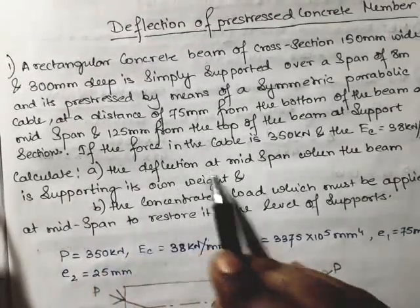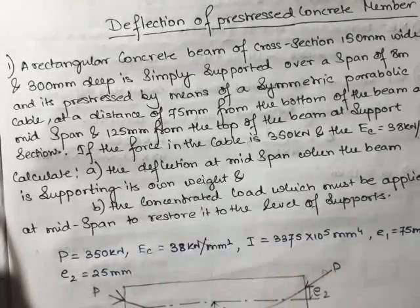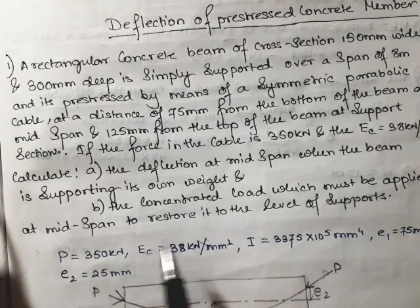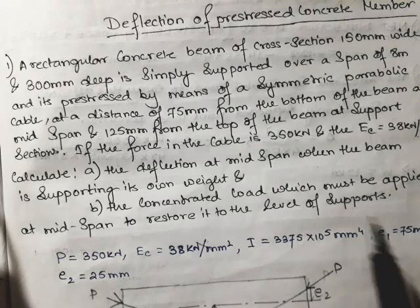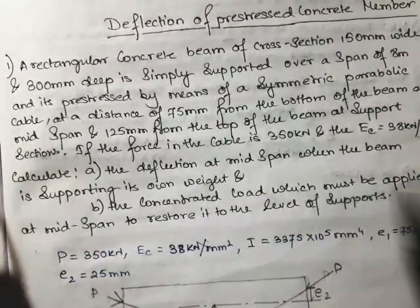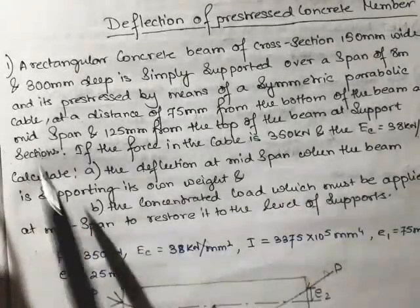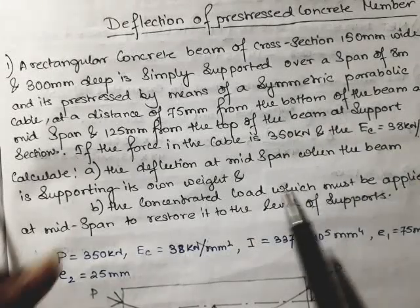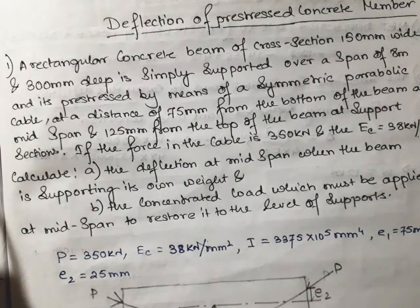Calculate the deflection at mid span when the beam is supporting its own weight, and find the concentrated load which must be applied at mid span to restore it to the level of the supports. The question asks for the deflection under all given load criteria, and what concentrated load can be applied to achieve zero net deflection.